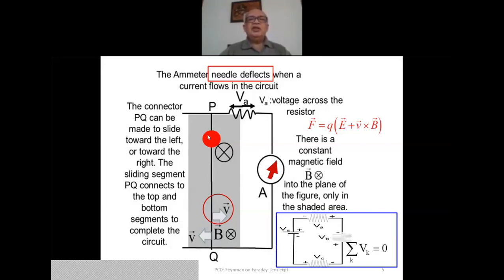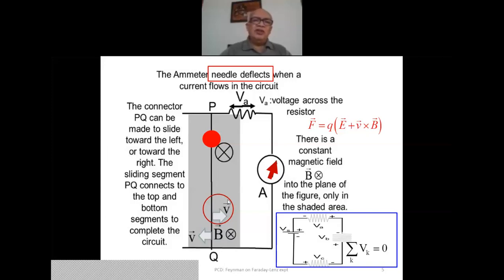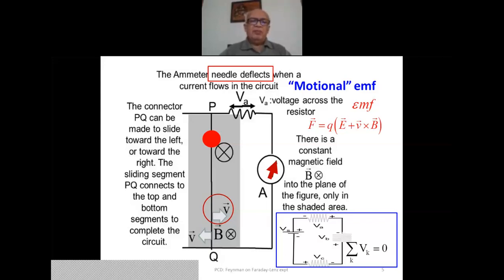The charge element experiences a Lorentz force. It picks up a velocity toward the right because you have physically moved the circuit PQ to the right. The Lorentz force — V cross B times the charge — accelerates it from Q to P, setting up the force. So the cause of this current is the Lorentz force. This is what you often call a motional EMF, because it is the motion of the circuit element PQ which is responsible.